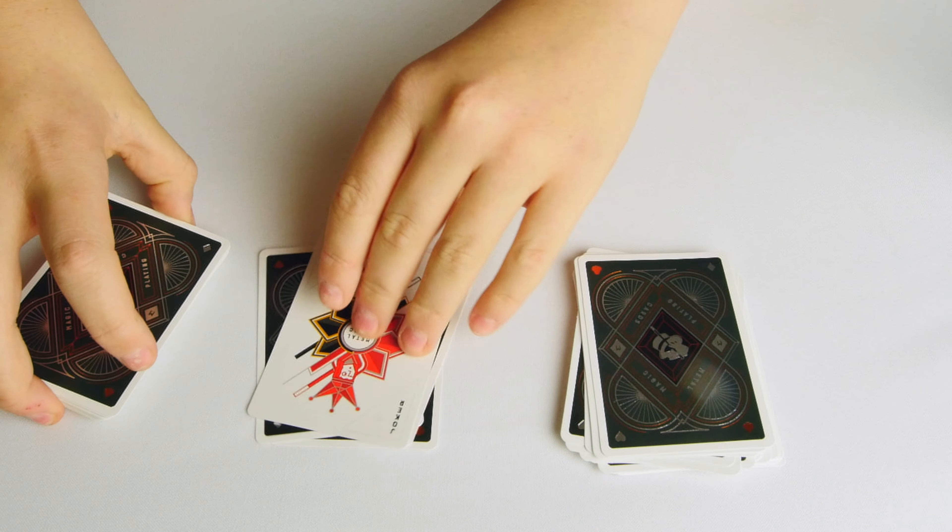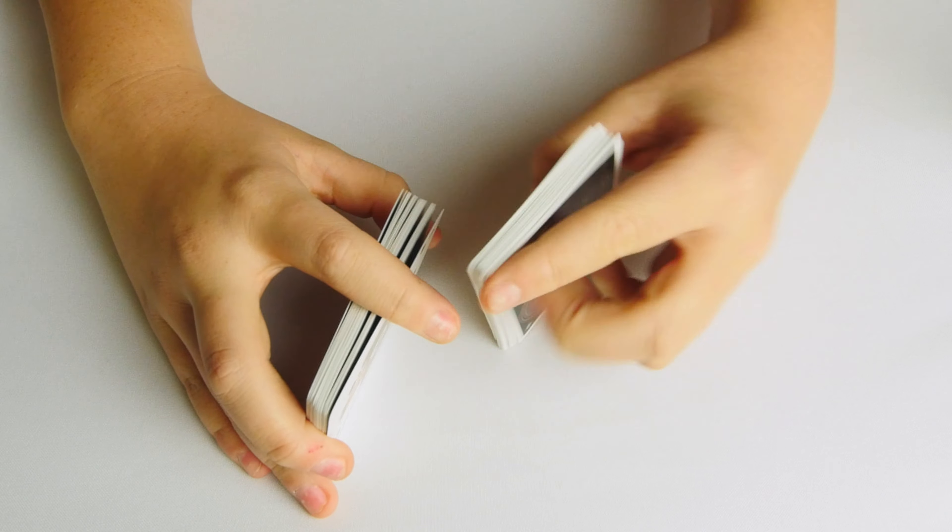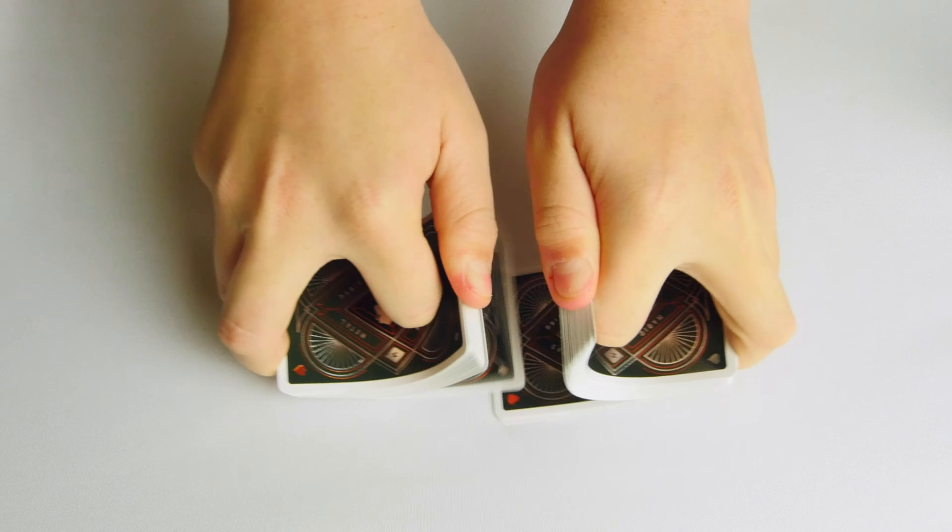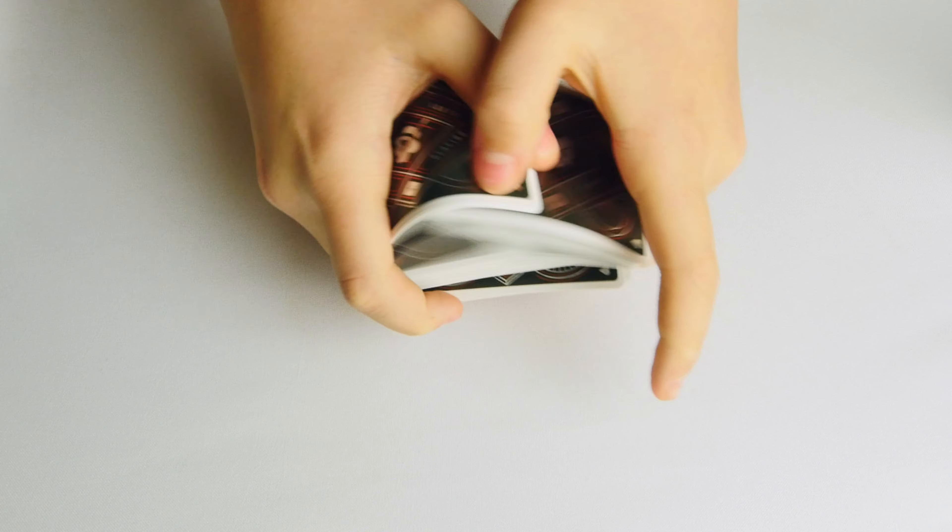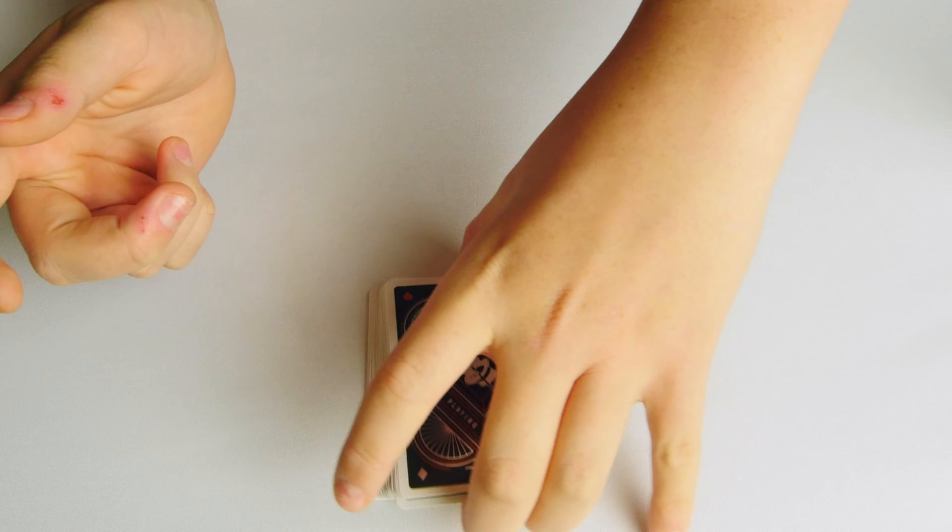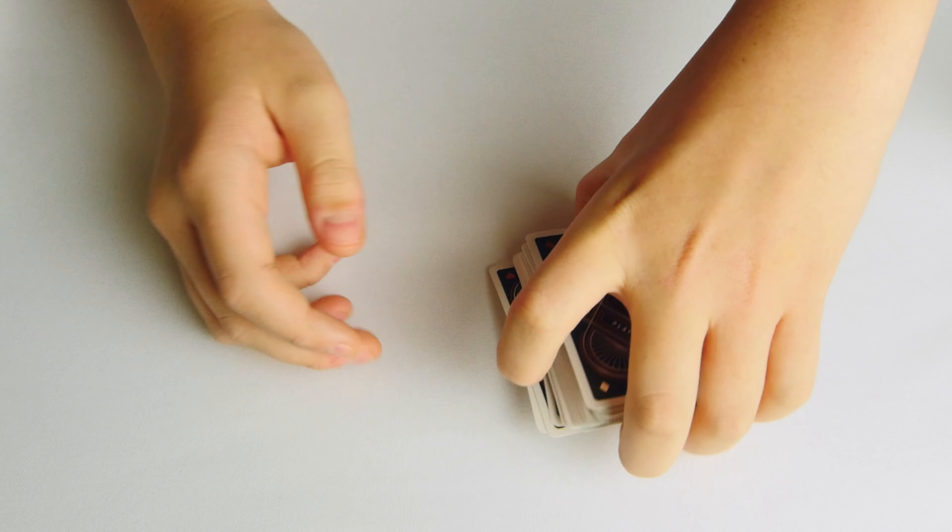So let's do it again, and then we'll tell you how to do it. Let's start by shuffling the deck, or hand it to someone who's watching the trick and let them shuffle it for you. Now, let's split the deck in two, and then let's do one more shuffle.